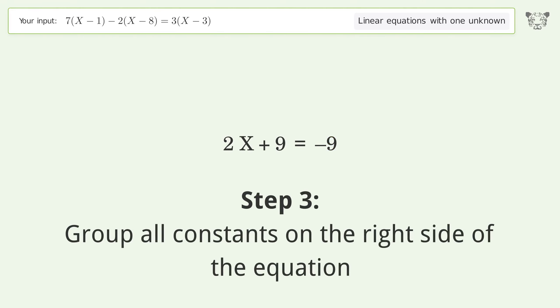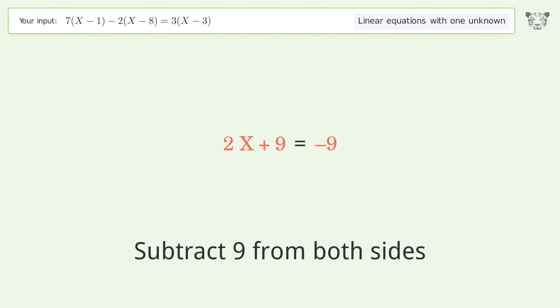Group all constants on the right side of the equation. Subtract 9 from both sides and simplify the arithmetic.